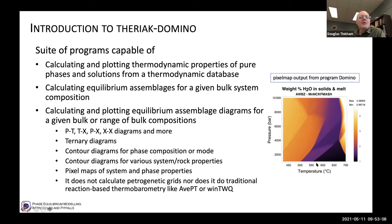They also make what we call pixel maps. This is a simple pressure-temperature diagram in the MnNCKFMASH system for a metapelitic bulk composition showing weight percent H₂O tied up within the solid phases, as well as at high temperature, the amount of H₂O tied up within the melt phase. Theriak-Domino does not calculate petrogenetic grids like ThermoCalc does, nor will it do traditional reaction-based thermobarometry — so no average PT or TWEEQU-style thermobarometry.